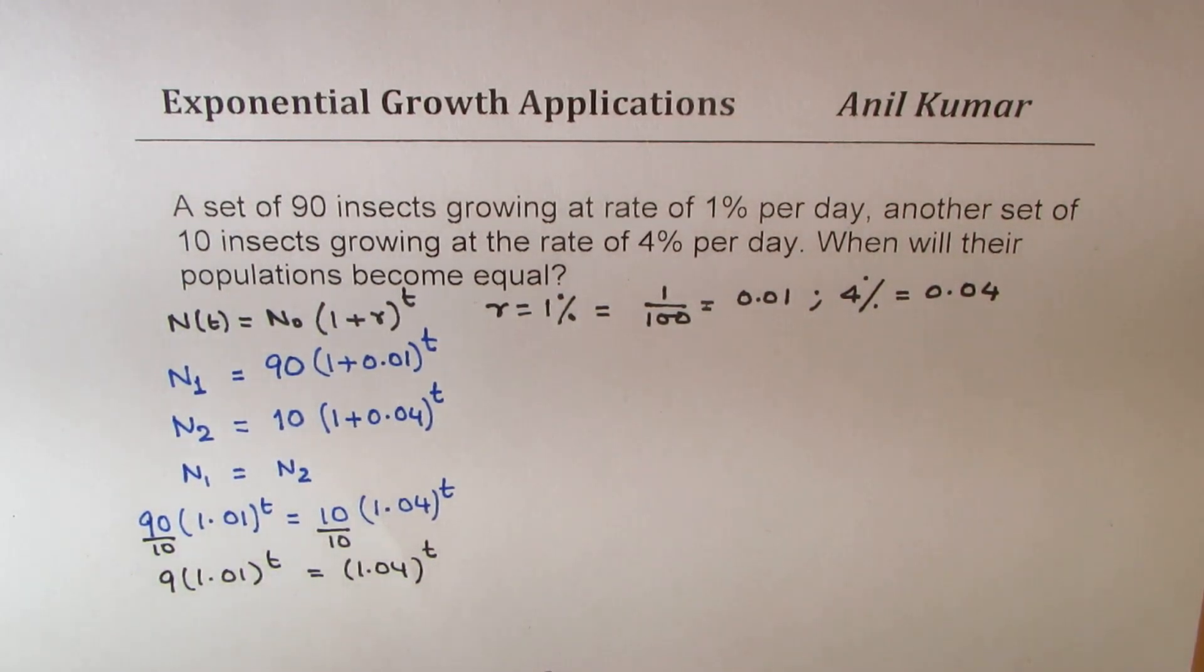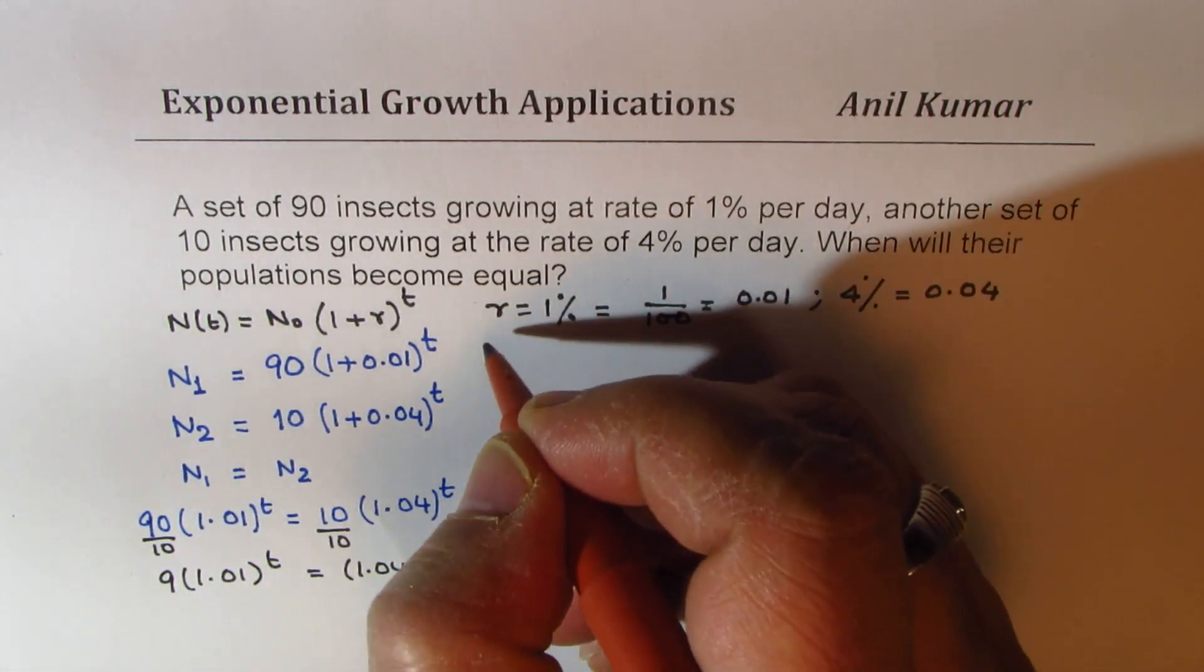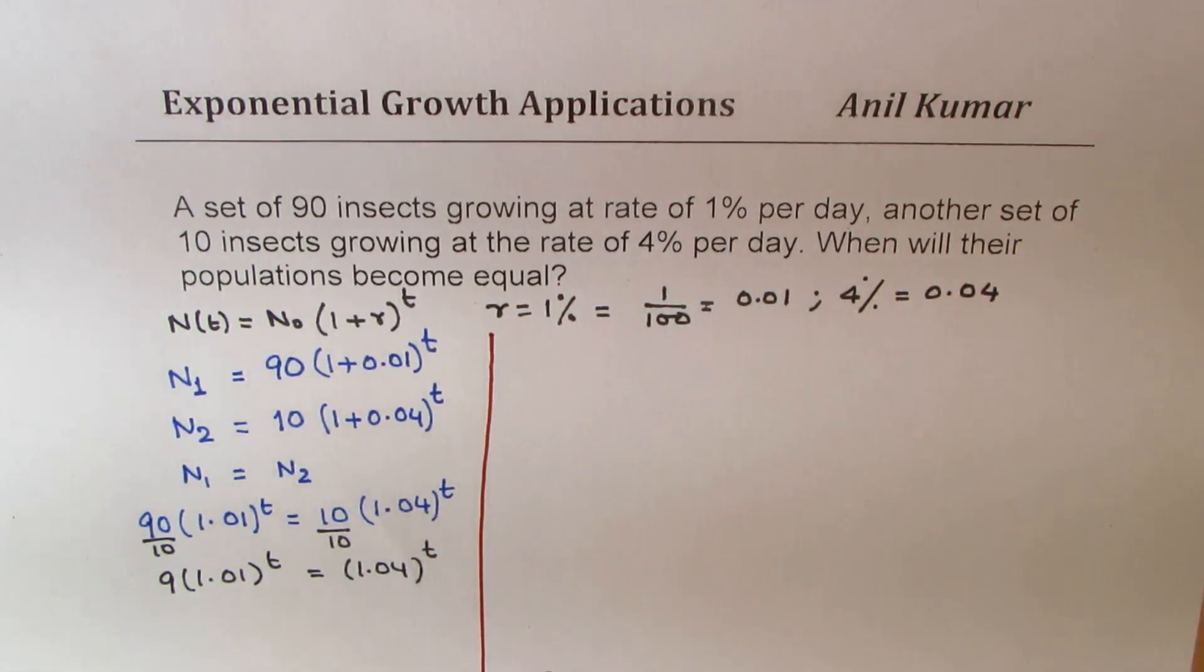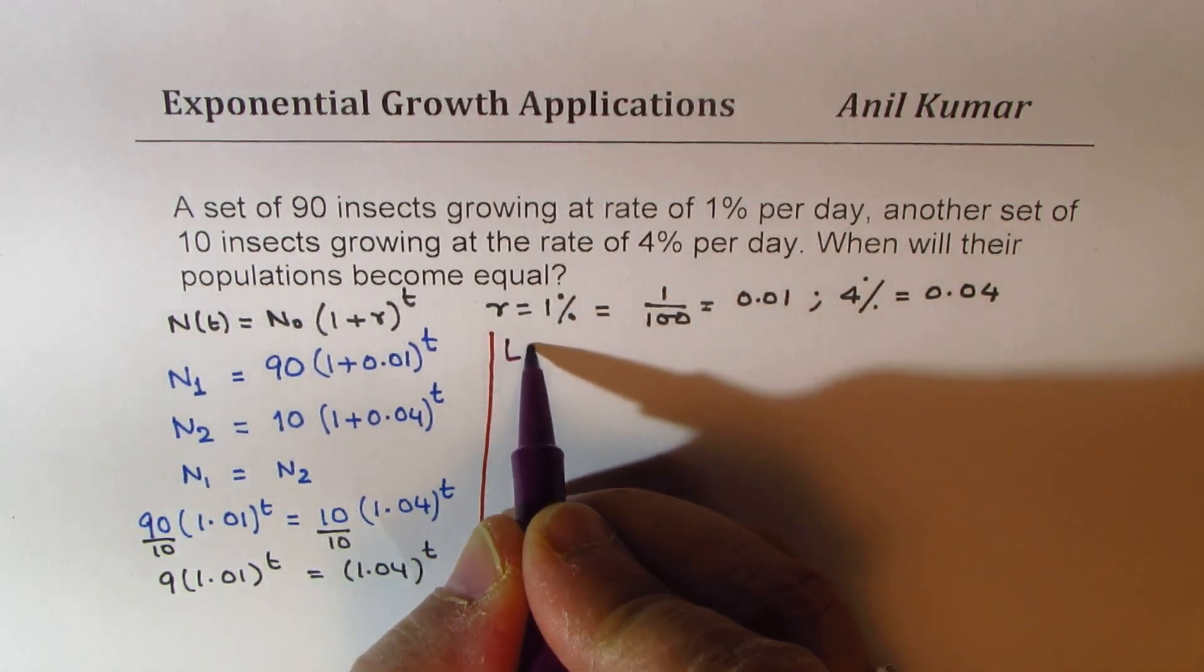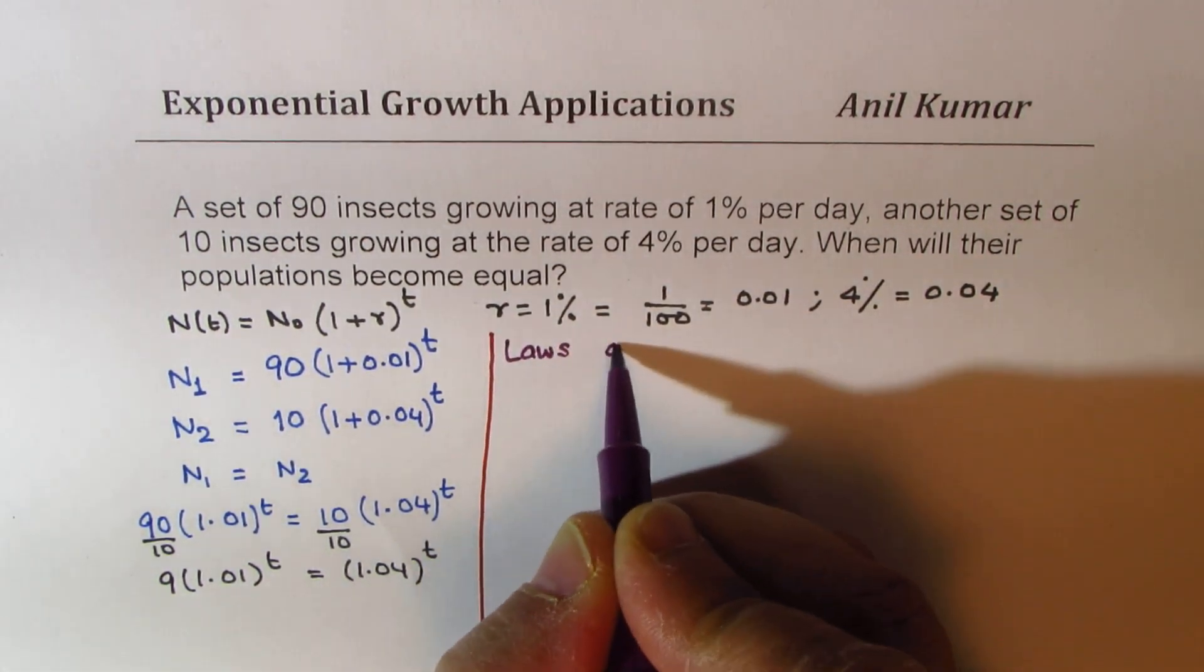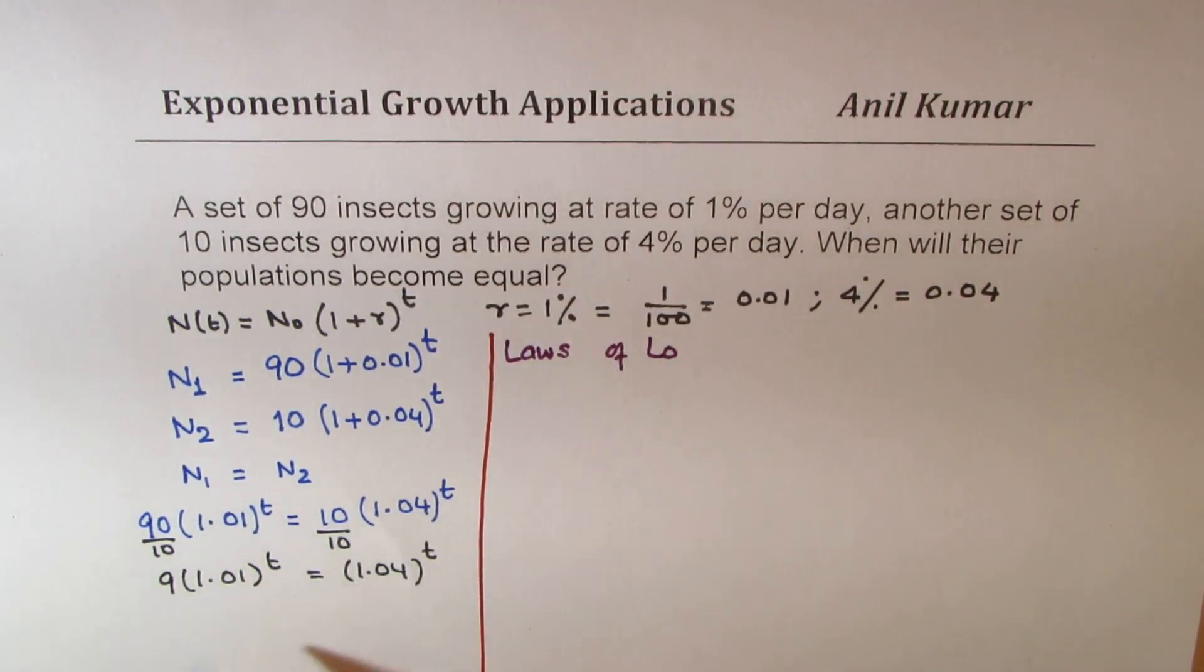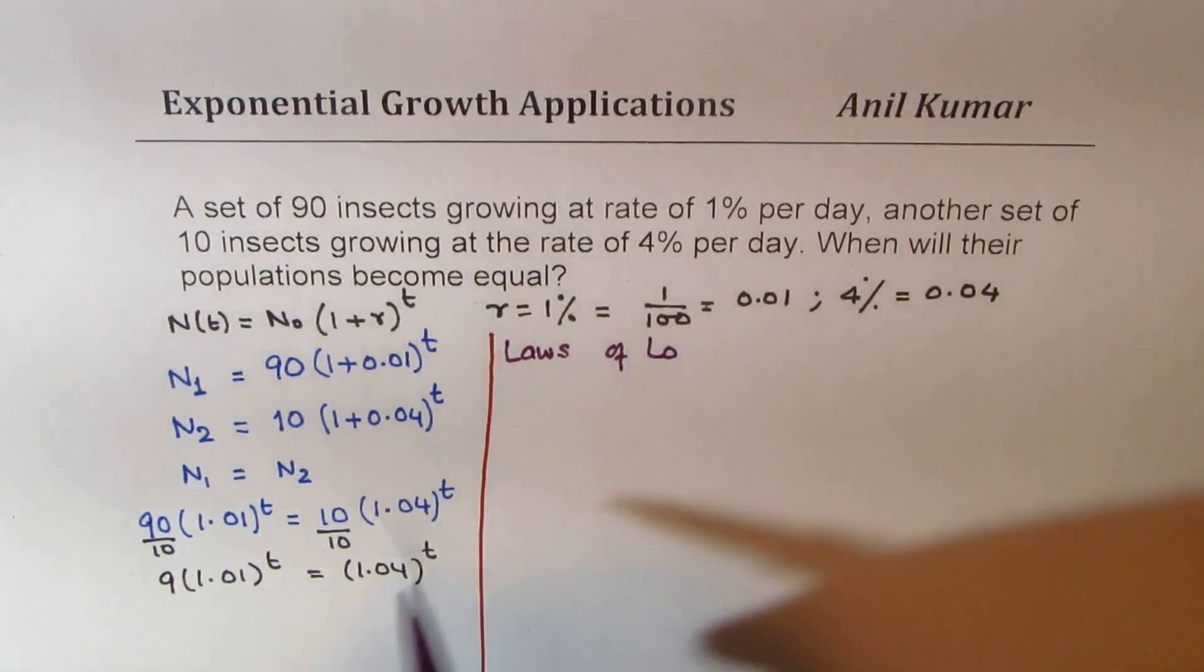Now the question is: how to find t from such an equation? So in exponential equations, we really don't have a method to find it. One of them will be graphing. You could use Excel sheet to find it. Those are different ways. So what we do in this case is use logarithms. So let me share with you some laws of logarithm, and then we'll use those laws to solve it further.